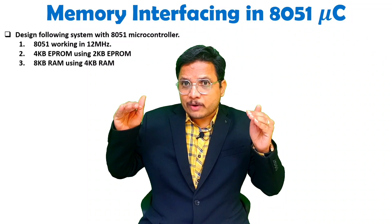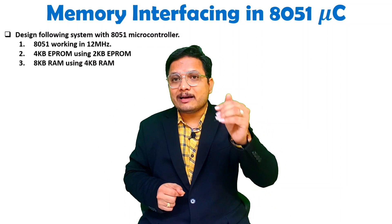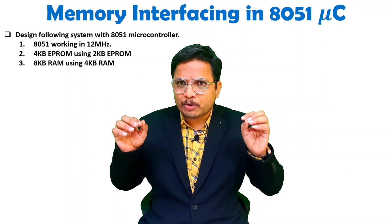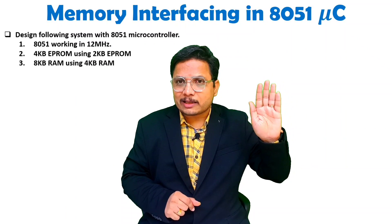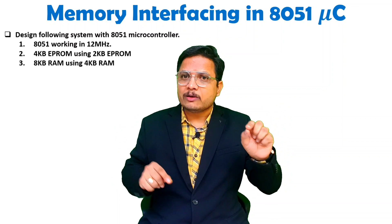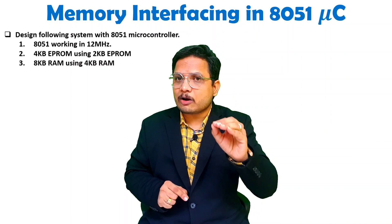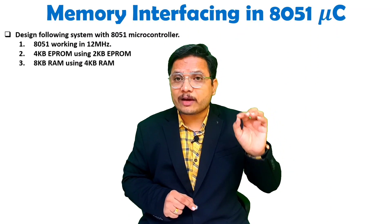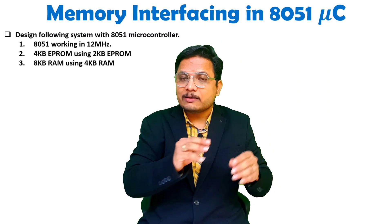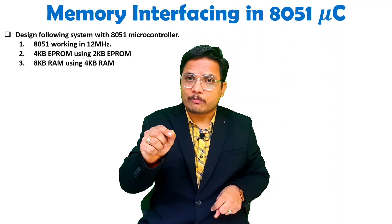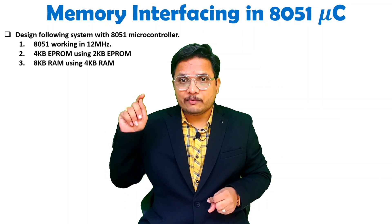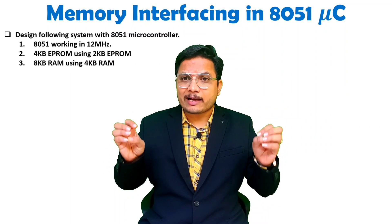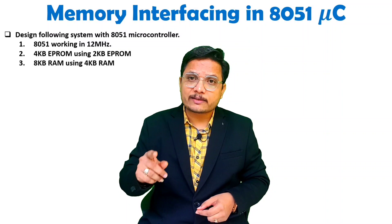If they have the same address, you would have to discard one of them — which we don't want. You can provide separate addresses: one for internal ROM and a separate address for external ROM. The internal ROM has addresses from 0000h to 0FFFh, so do not use this address range when interfacing external ROM. Also, the EA bar pin must be connected to VCC.